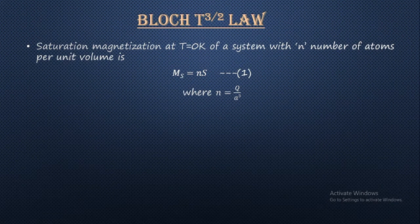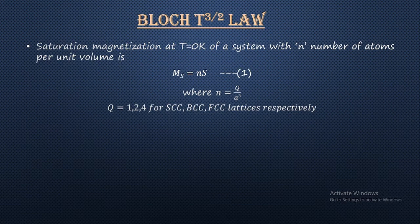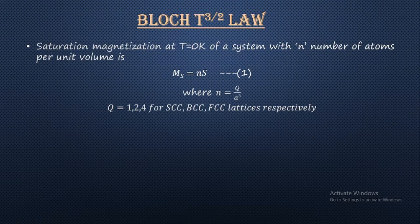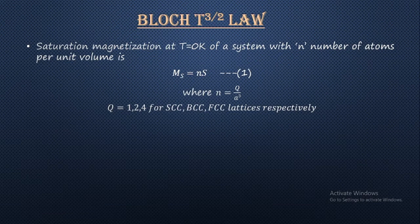Here q takes values like 1, 2, 4: for a simple cubic unit cell q = 1, for a body-centered unit cell q = 2, and for a face-centered cubic lattice q = 4. So q is the number of atoms per unit cell, and when we divide by the volume a³ we get the number of atoms per unit volume. In equation number 1, S is the magnitude of the spin which the system consists of.